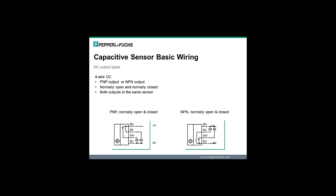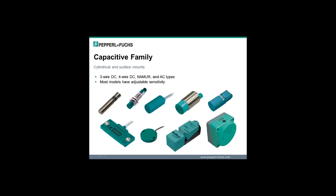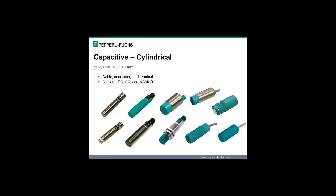4-wire DC sensors are available in both PNP and NPN type outputs. The Pepperel and Fuchs capacitive family has cylindrical and surface mount types for different mounting options. The outputs available are 3-wire DC, 4-wire DC, Nemur and AC types. Most capacitive sensor models have sensitivity adjustment. The cylindrical diameter sizes are M12, M18, M30 and 40 mm. Some models have options for cable connector and terminal connection types. Output types offered are DC, AC and Nemur.